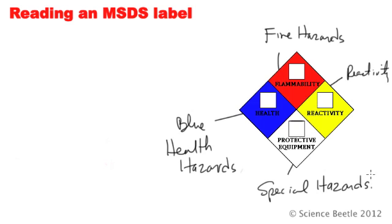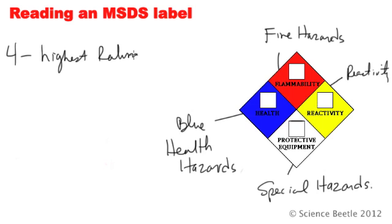We are going to break this lesson into several parts. The first part gives you a general overview of what the MSDS label is and how to read it. When you look at the label, there are four numbers that can go into each of the boxes — anything from a zero, one, two, three, or four. On this scale, four is usually going to be the most severe and highest rating for that particular color category.